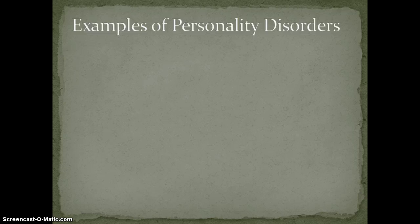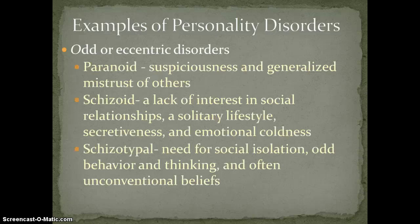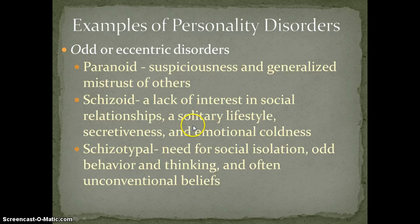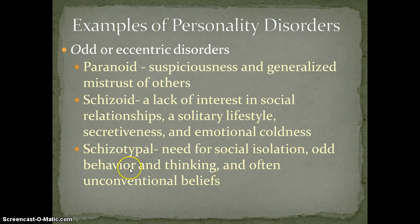So these are some personality disorders. We're not going to go way into depth with all of them because we're going to focus on antisocial personality. I'll just mention them. Odd or eccentric disorders: Paranoid — you're suspicious and mistrustful of others. Schizoid — a lack of interest in social relationships; you're a loner, secretive, cold. Schizotypal — you're socially isolated but you also might have odd thinking or beliefs; you might be writing some weird manifesto about how you're going to leave society.